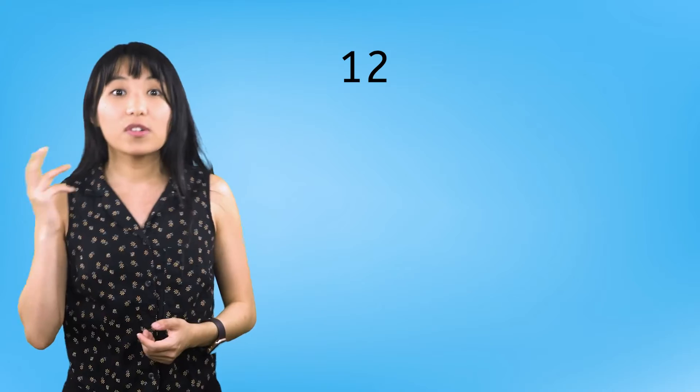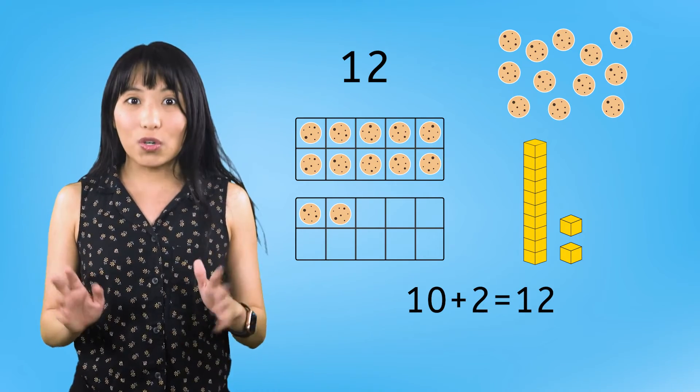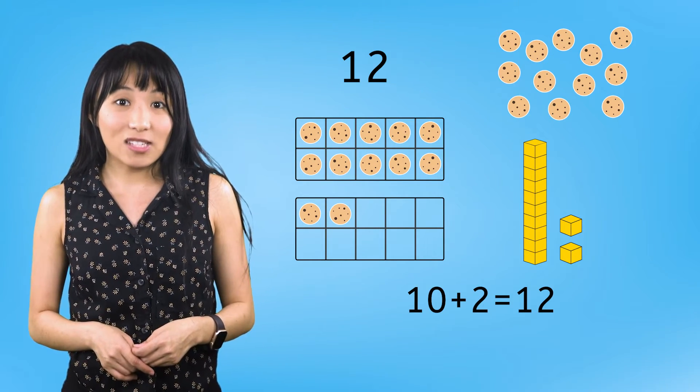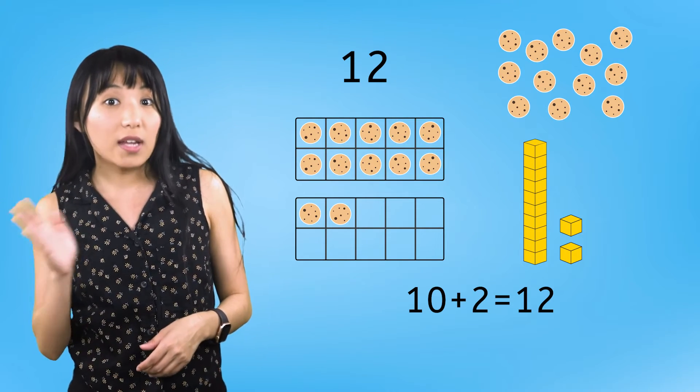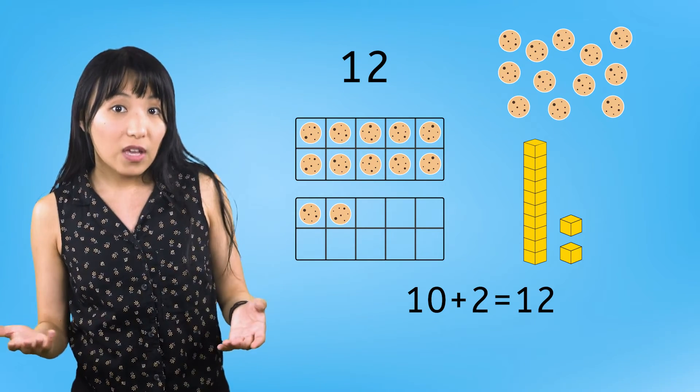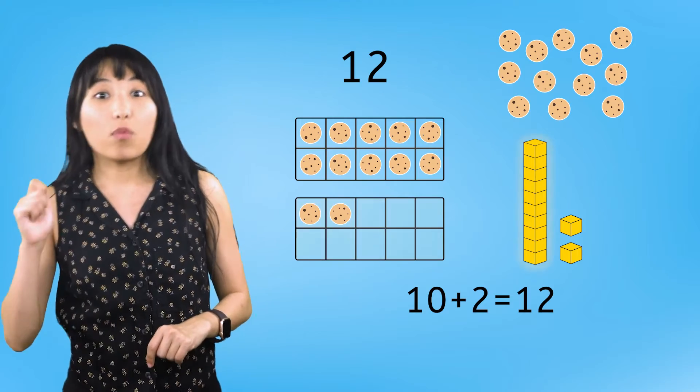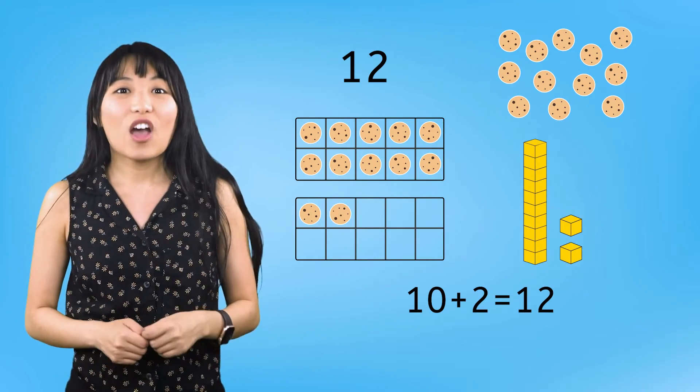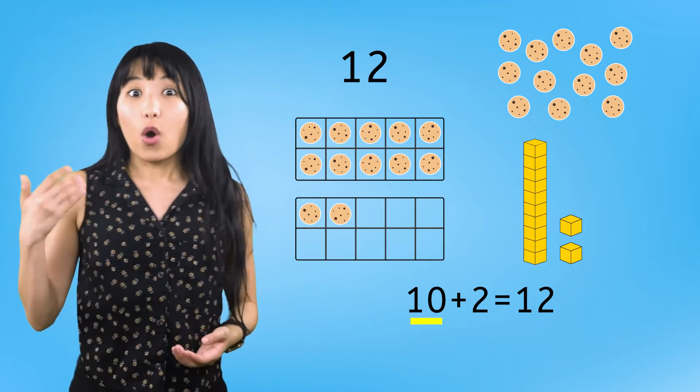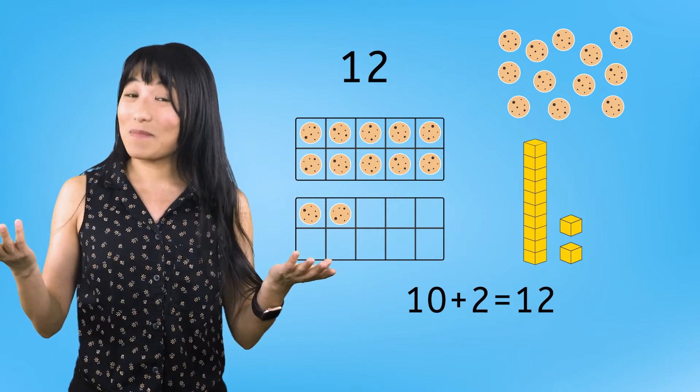Great job, friend! We were able to represent the number 12 five different ways. We used numerals, a picture, 10 frames, base 10 blocks, and an addition sentence. When I look at these representations of 12, I keep seeing the numbers 1 and 2. Here in the numeral, we use 1 and 2 to write the number 12. And here in the 10 frame, we have one 10 and 2 left over. Then we have one 10 and 2 ones for our base 10 blocks. And then again, we have one 10 here and 2 here in our addition sentence. It's not magic. It's math.